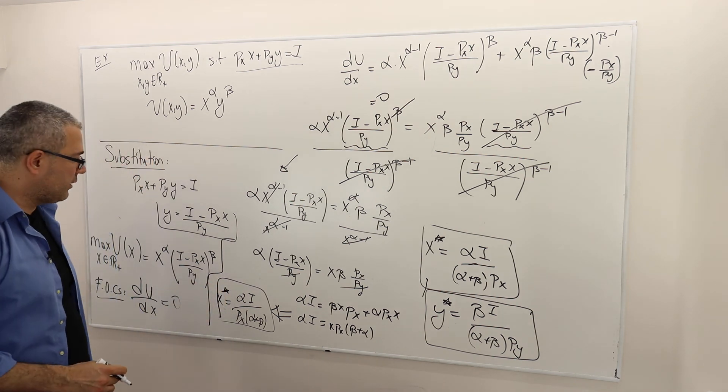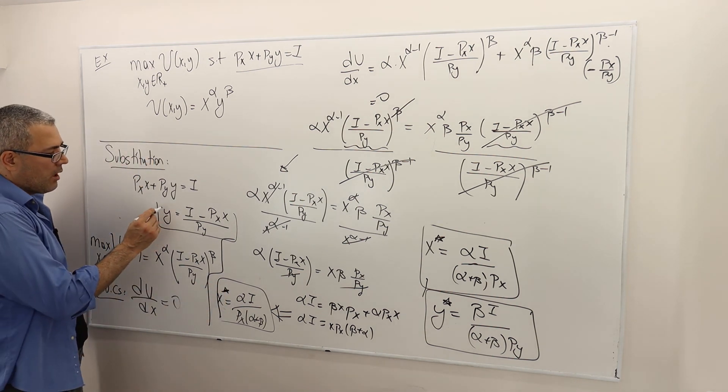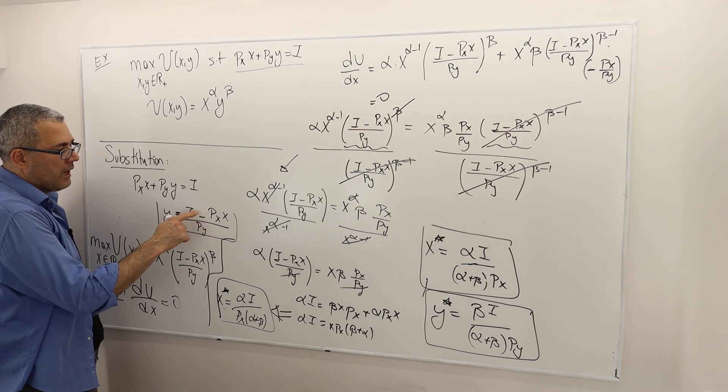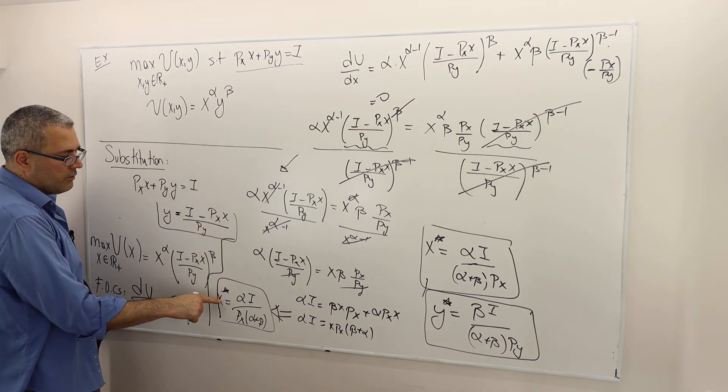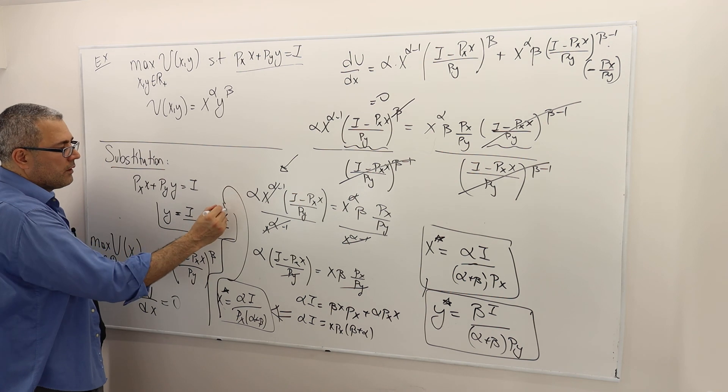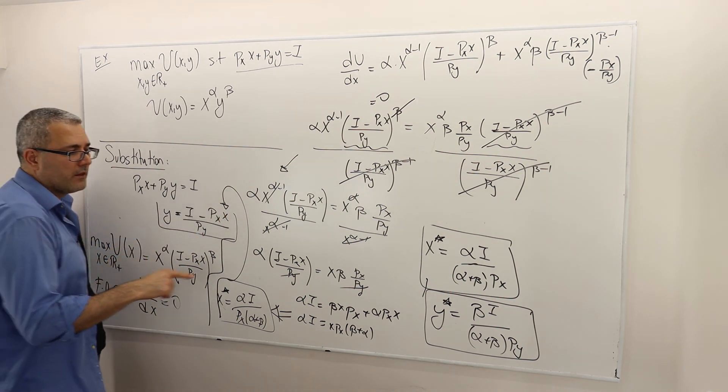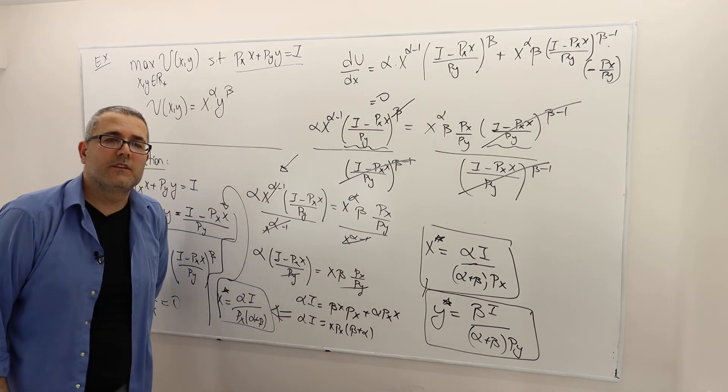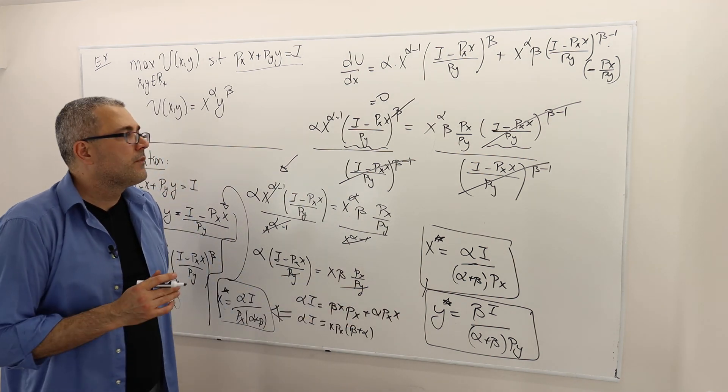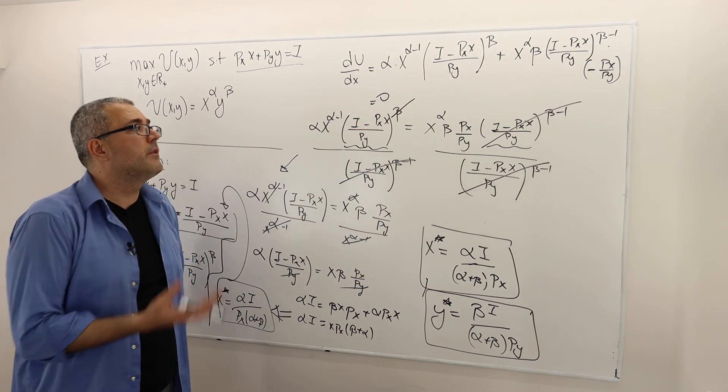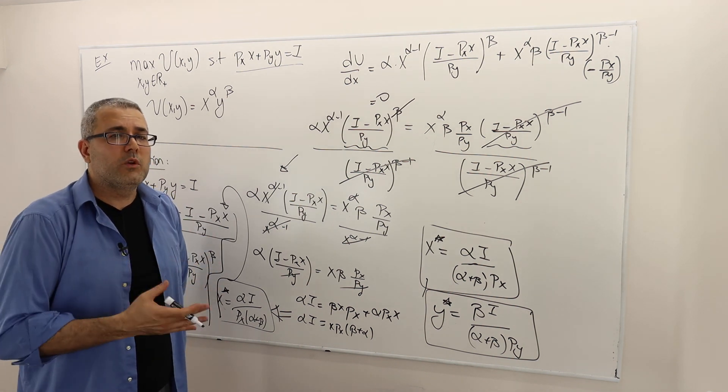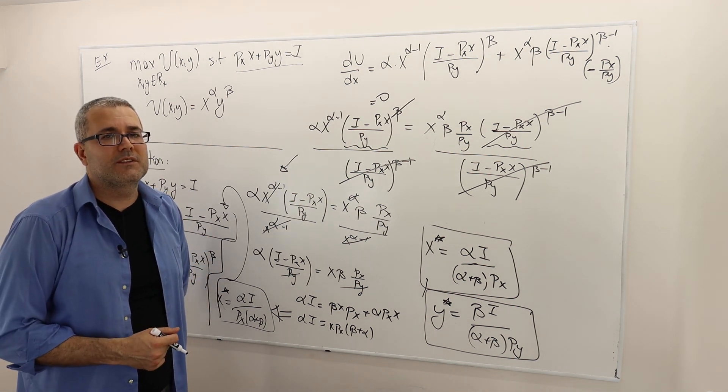And how do you find Y star? Simple. Remember, Y was equal to income minus PXX divided by PY. Once you find X star, plug it back here. You're going to find Y star. And if you do the math, you're going to see that Y star is also this. All right. So this is how we solve the utility maximization problem in two different ways. And we will keep doing some more examples. All right. Let's go.